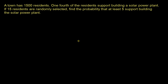In this video I want to talk about how to use the binomial approximation to the hypergeometric distribution. A town has 1,500 residents; one-fourth of the residents support building a solar power plant. 15 residents are randomly selected. Find the probability that at least five support building the solar power plant.